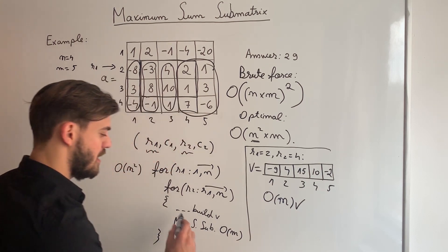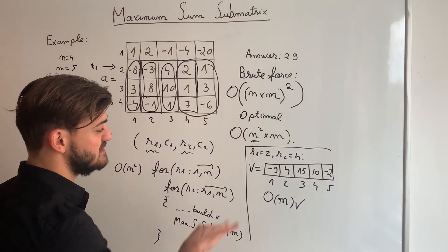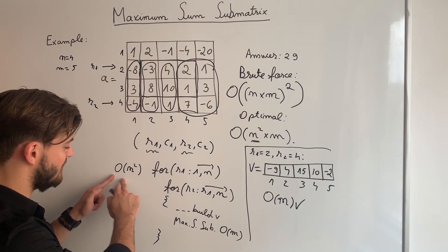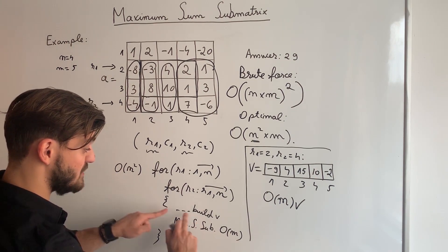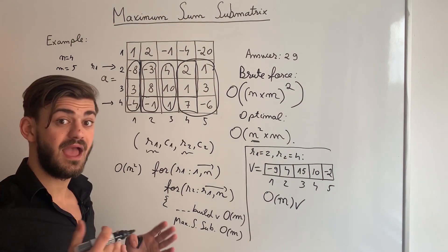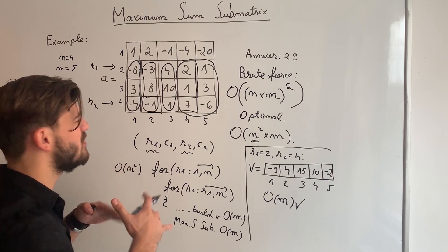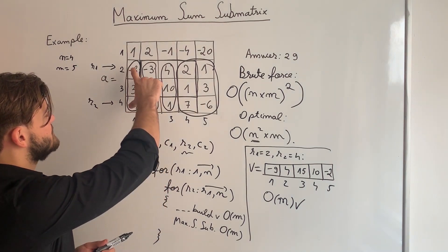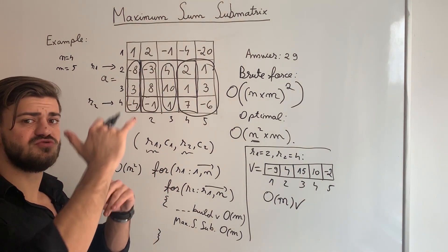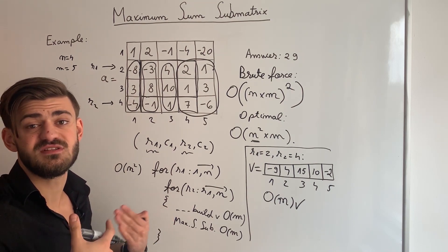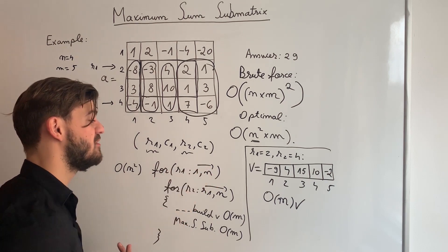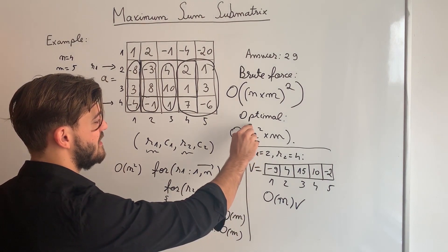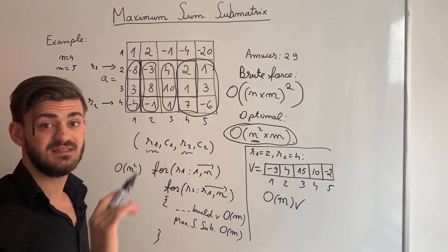Now, how to build the array V? This array has M elements, and I need to compute each in O(1). Each element is the sum of all elements in a single column between two fixed rows — which is a sub-matrix query. So I can use my partial sums matrix to build array V in O(M). Therefore, our total complexity is going to be O(N²×M), and this is the final solution.